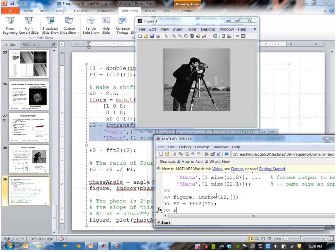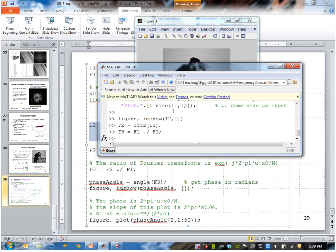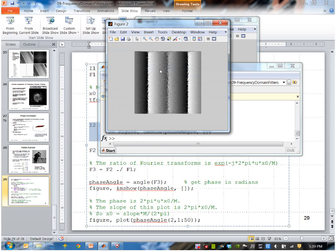I'll take the Fourier transform of I2, take the ratio, call that F3. Then I'll find the angle at every point, I'll call that phase angle. This is the angle at every point. I'll just show that so we can see what that looks like. It's the angle in radians at every point.